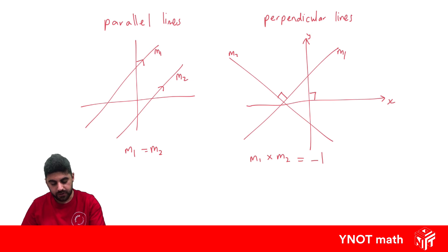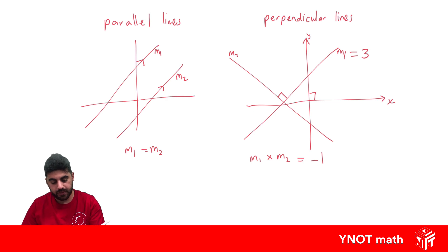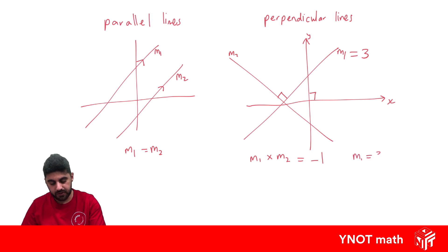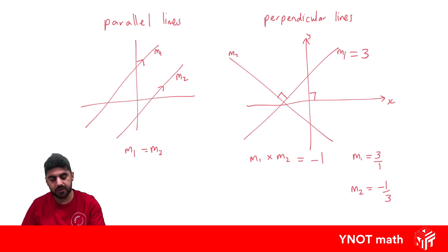You can also think of it this way: let's say the gradient of this line was three. The gradient of the other line we can get by doing the negative reciprocal, which means if m1 is three, you can think of it as three over one. For the perpendicular line, we flip our fraction to get one over three and we change its sign. So if it's positive, it becomes negative; if it was negative, it would become positive.